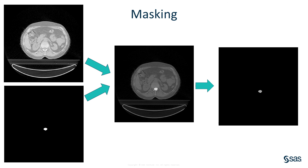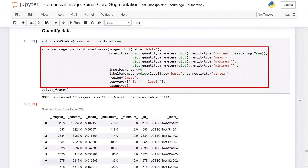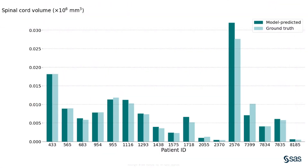Now that we have a mask of exactly where the spinal cord is, we'll use the mask specific step in the process biomed images action to fill the binary mask with the original pixel values of the image. This is useful because we can now analyze the change in pixel intensity values for patients over time. Specifically, if we had a patient with a lesion on their spinal cord, we can monitor the lesion by looking at the change in pixel values. Using the Quantify Biomed Images action, we can quantify a variety of different metrics for the spinal cord region. Here I have plotted the ground truth spinal cord volume against the predicted spinal cord volume from the network, and it can be seen that the network prediction mirrors the ground truth pretty accurately.